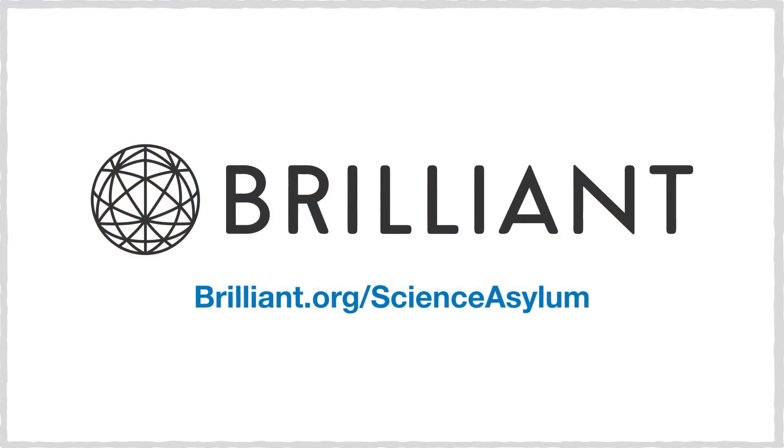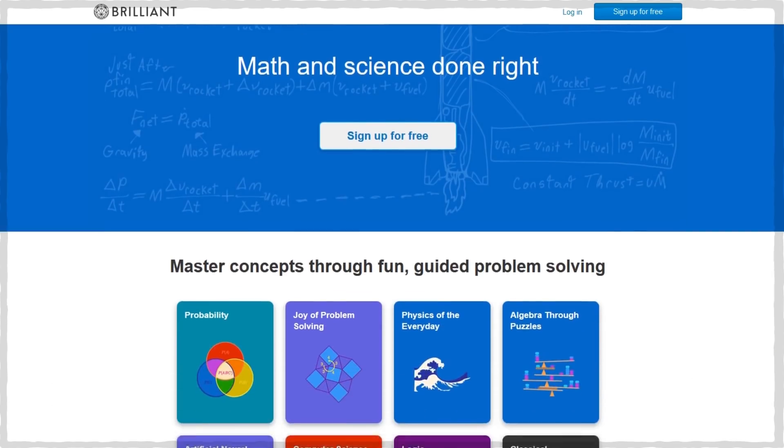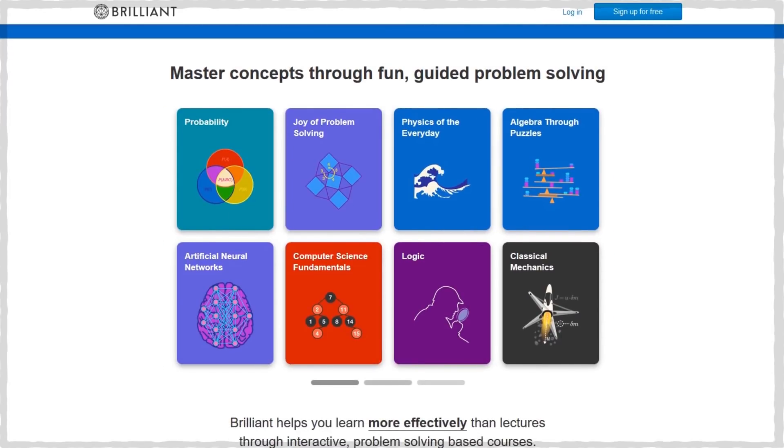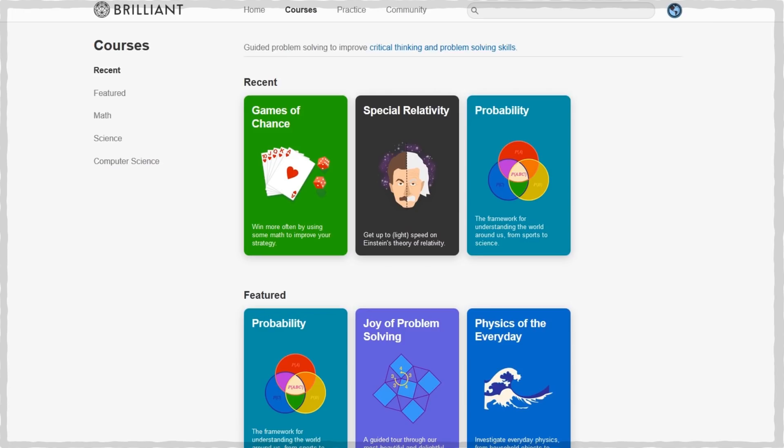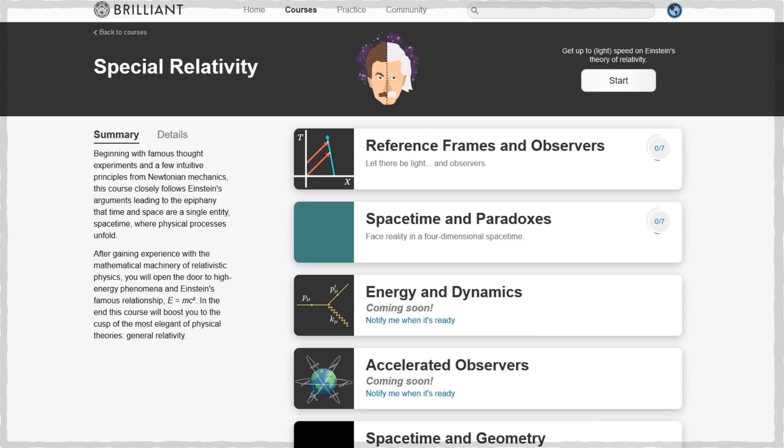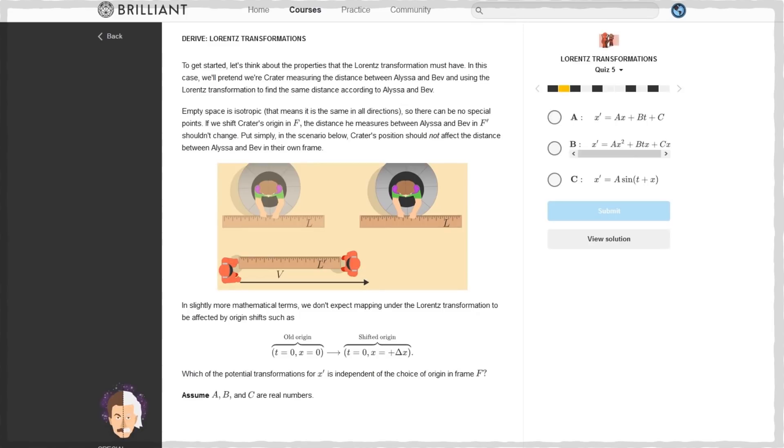Still feeling like you need some practice? Then check out Brilliant.org. Brilliant is a problem-solving website designed to train you to think like a scientist on a wide variety of topics. If you liked this video, then you'll probably like their course on relativity. Anyone who is new to relativity might want to check out Reference Frames and Observers. It gives you that traditional introduction using Lorentz transformations.